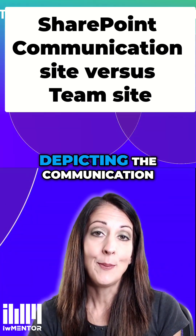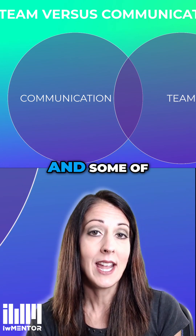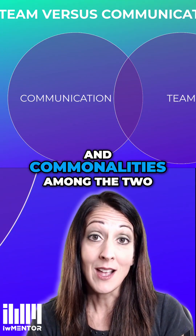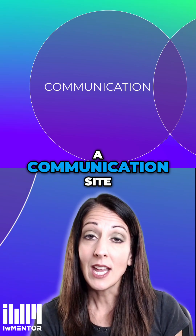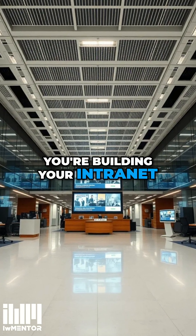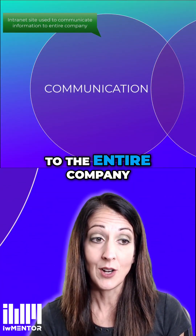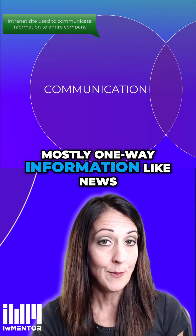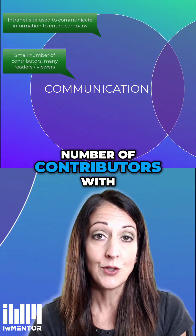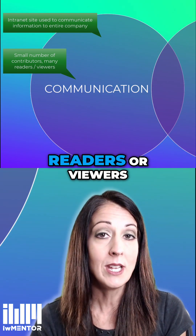Here's a graphic depicting the communication sites and team sites, some of the concepts around them, and differences and commonalities among the two. A communication site is the main type of site used when you're building your intranet. This is used to communicate information to the entire company, mostly one-way information like news — things that people can read or click on. There are a small number of contributors with a communication site and very many readers or viewers.